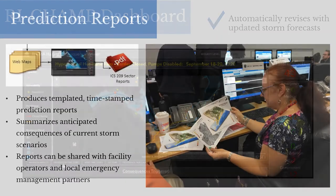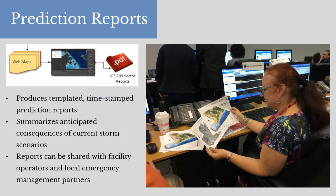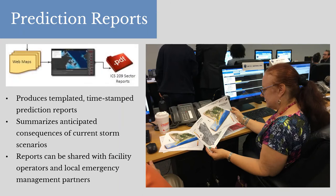In addition to the interactive ArcGIS dashboard, RIECHAMP can produce templated, time-stamped prediction reports in PDF form, summarizing anticipated consequences of the current storm scenario by facility, critical infrastructure sector, or emergency support function. These reports can be used for record-keeping in the EOC and can be shared with facility operators and local emergency management partners.